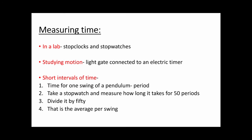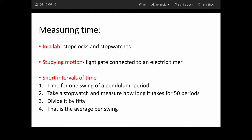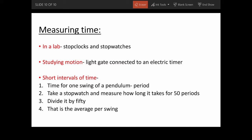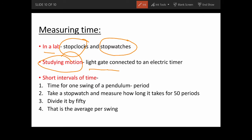Now the last point is measuring time. To measure time, you can use many different tools. In a lab you do something different than in a marathon or when measuring short intervals of time. In a lab, you would use stop clocks and stopwatches. But when you're studying motion, the 0.001 precision matters, so you use a light gate connected to an electric timer.